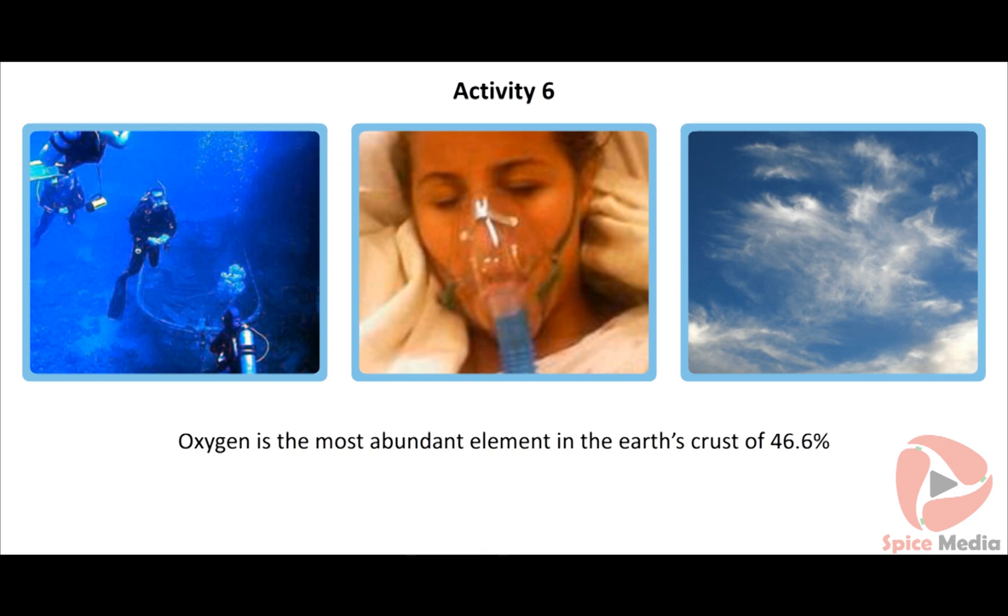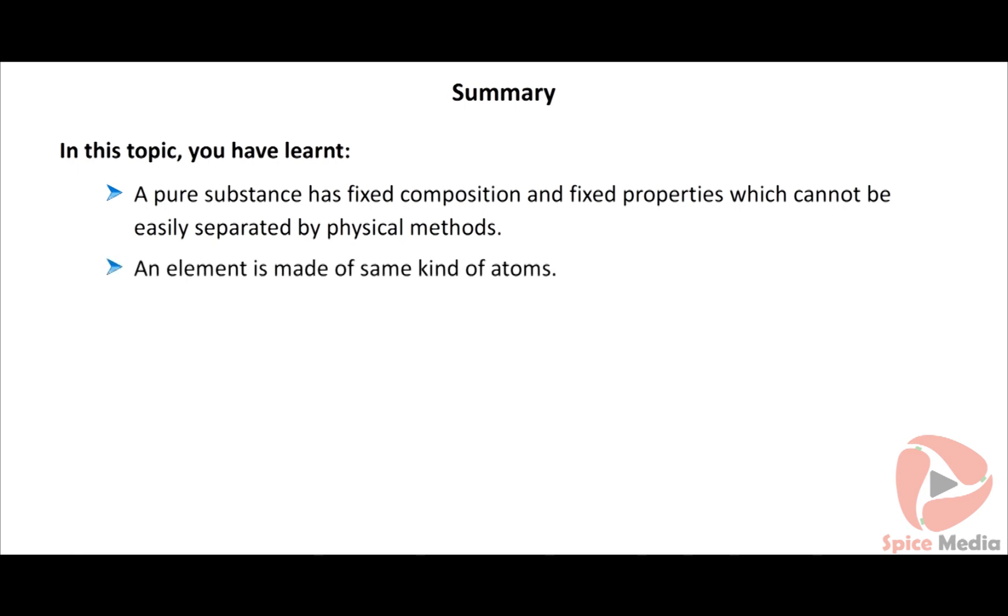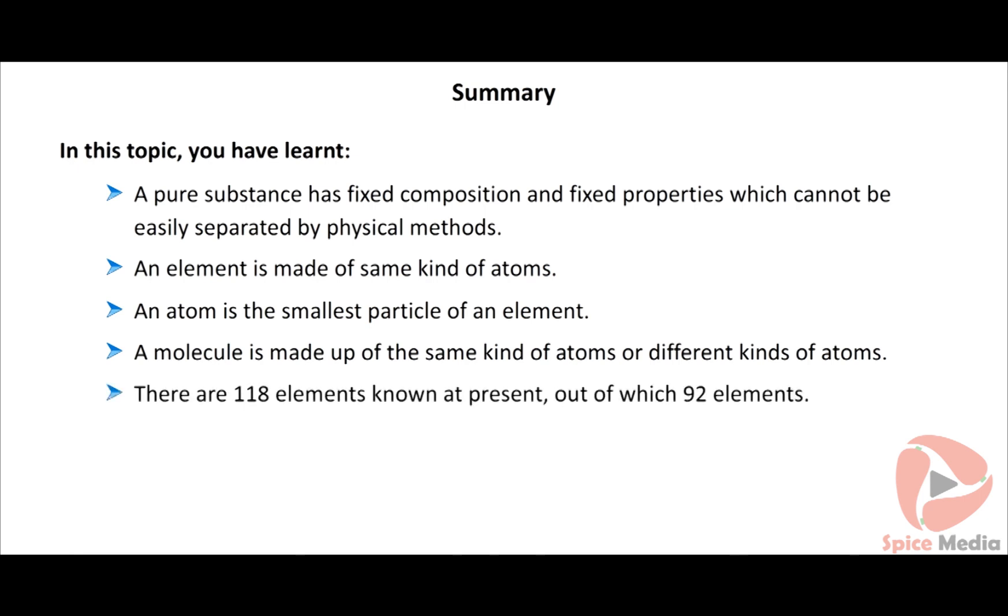In this topic you have learned: A pure substance has fixed composition and fixed properties which cannot be easily separated by physical methods. An element is made of the same kind of atoms. An atom is the smallest particle of an element. A molecule is made up of the same kind of atoms and different kind of atoms. There are 118 elements known at present, out of which 92 elements occur in nature and the remaining 26 have been prepared in laboratory by artificial methods.